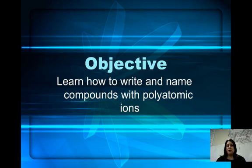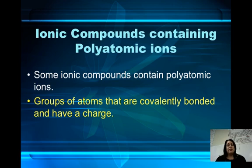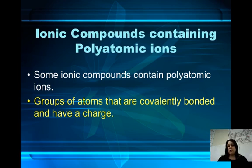It's very similar to video 2 where you learned how to write and name compounds for monoatomic ions. Some ionic compounds contain polyatomic ions. Polyatomic ions, if you remember from the last chapter, are groups of atoms that are covalently bonded and have a charge. Those groups of atoms have either gained or lost electrons so that the central atom gets an octet, as well as every other atom, with the exception of hydrogen. If you remember, hydrogen gets a duet.